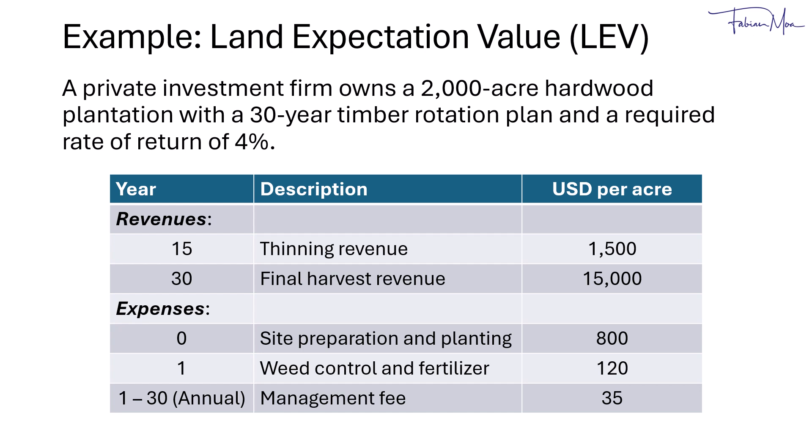Let's look at an example of a private investment firm that owns a 2,000-acre hardwood plantation with a 30-year timber rotation plan and a required rate of return of 4%. You could think of this as a high-value hardwood plantation growing thick mahogany or oak. There would be a thinning at year 15 — typically one to three rounds of thinning. Thinning means removing smaller trees that would be sold as pulpwood or low-grade timber.